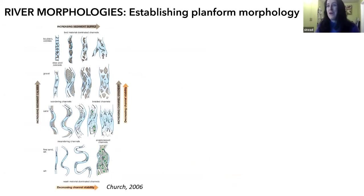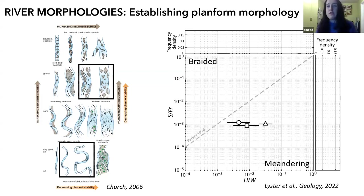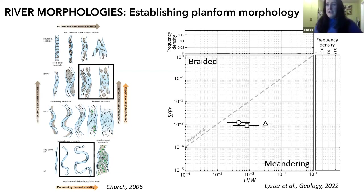So that's paleoslopes — that was exciting. The next thing I was really interested in reconstructing was planform morphologies. Typically, when we've thought about river planform in the past, we've wanted to call everything either meandering or braided. But the reality is there are so many more varieties of river planforms, and we're limiting ourselves if we just categorize rivers as a meandering end member or a braided end member. So I started looking at quantitative ways to estimate planform, and I came across planform stability fields.